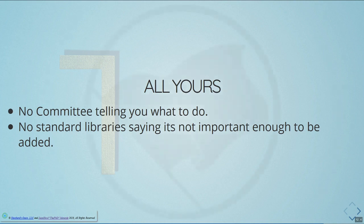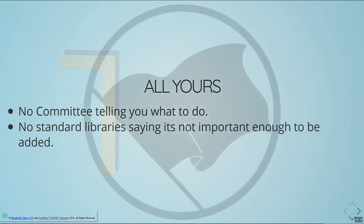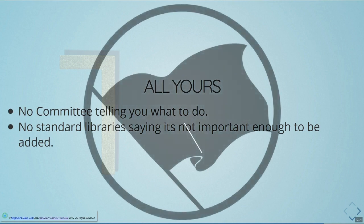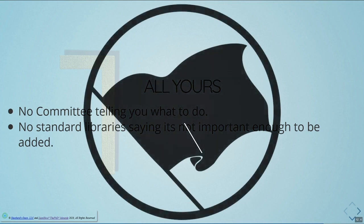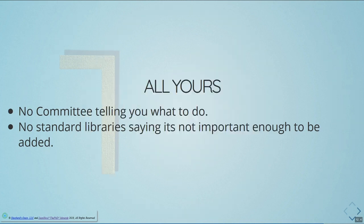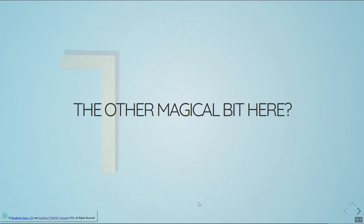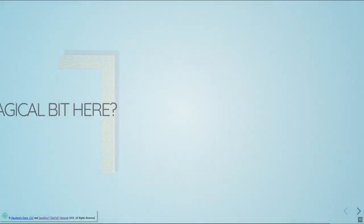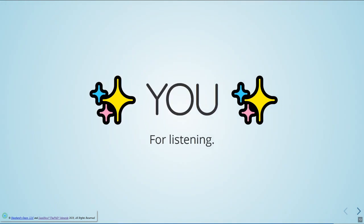And that means that we will seize the means of production. Each encoding object is its own type and strongly controls its semantics and representation. There's no committee telling you what to do, no standard library saying your use case isn't good enough. And that's the magical bit here — and of course the other magical part is you for listening. Thank you so much for this presentation. I hope you learned a lot and are excited about the future of text for C++.